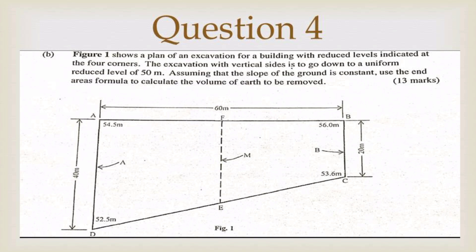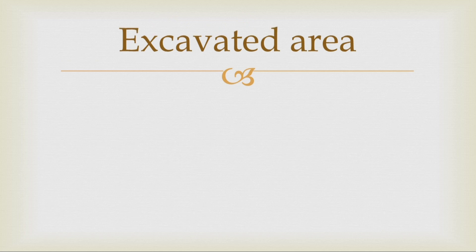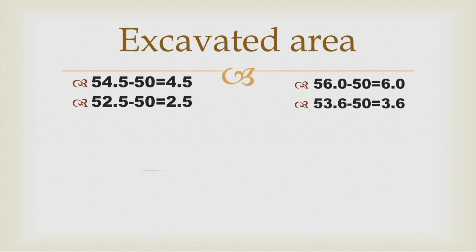After studying the diagram in plan view, we need to find the volume excavated using the end area formula. First, we find the difference in order to determine the vertical heights needed to be excavated — in other words, we subtract the four reduced levels by the 50-meter uniform reduced level, as stated in the question paper. I have illustrated what the volumes to be excavated will look like.